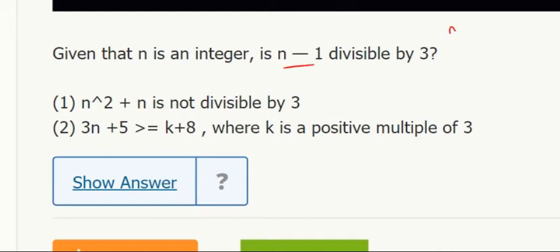Is n minus 1 divisible by 3? Well, that reminds me of this: n plus 1, n minus 1, n, n plus 1, n minus 1. That is divisible by 3 always because the three consecutive numbers multiply together.